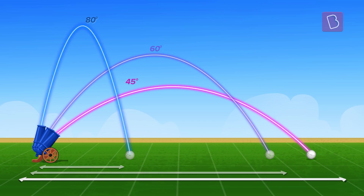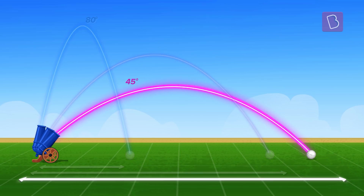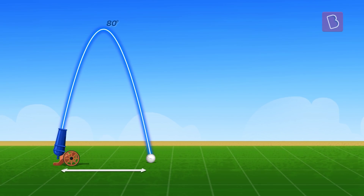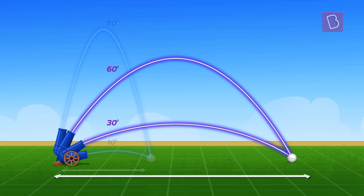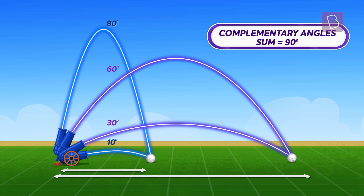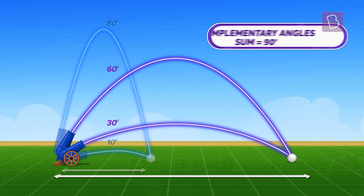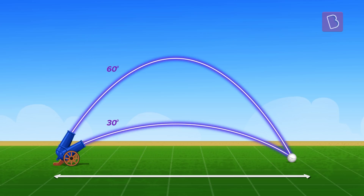If you're thinking the range is highest at 45 degrees, then you're right. Interestingly, the range is identical for some pairs of angles — 10 and 80, 30 and 60, and so on — for complementary angles. So, if the range is identical, then what is the difference between these throws?